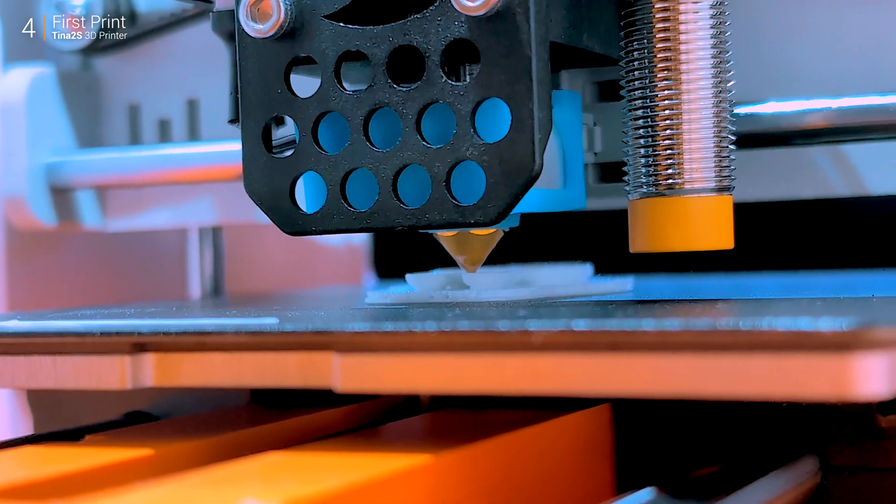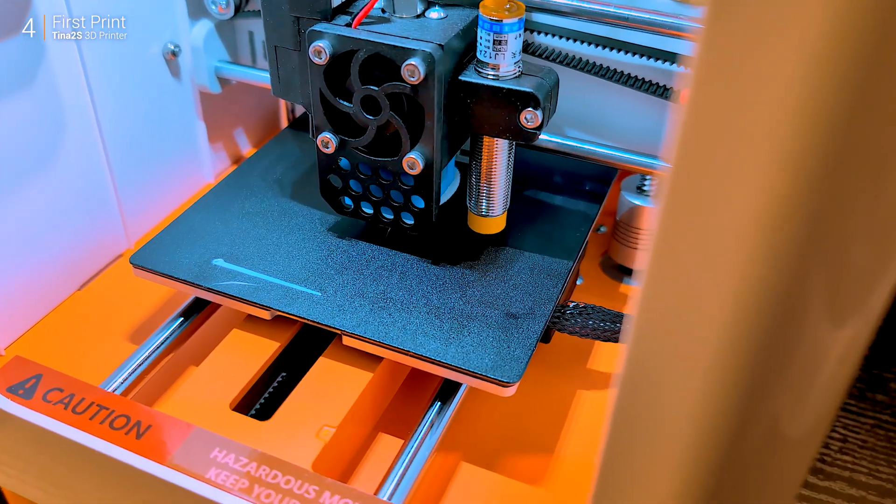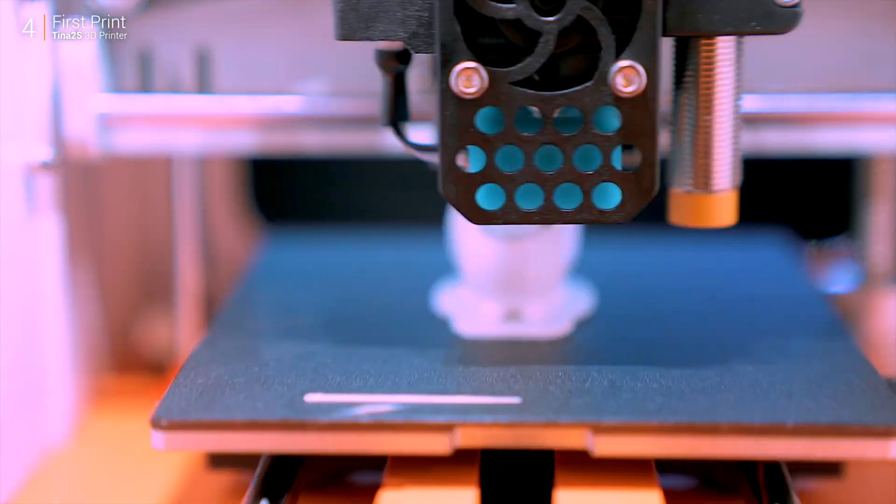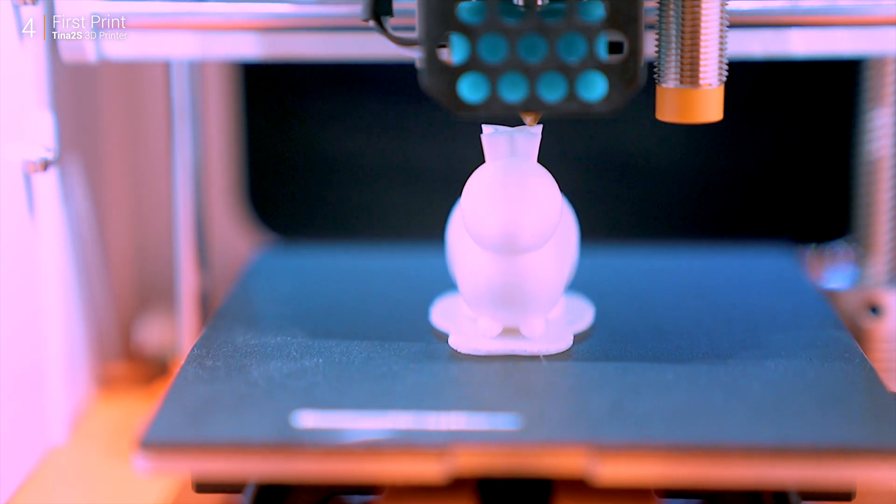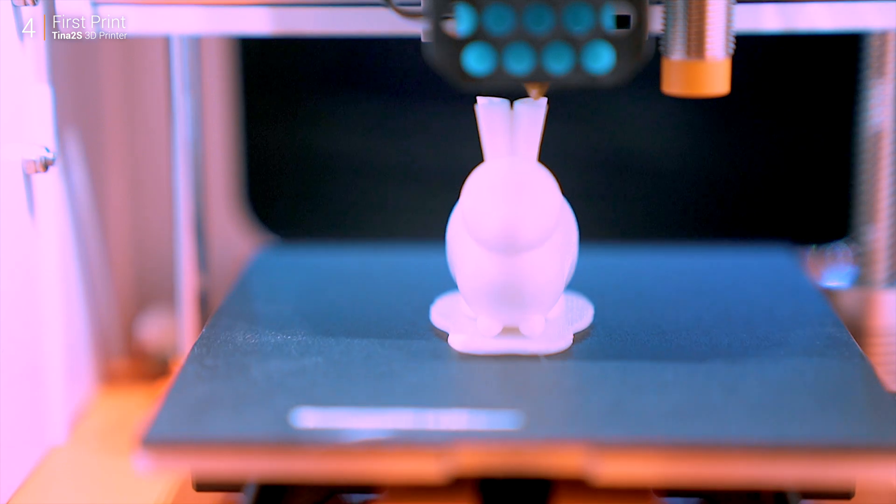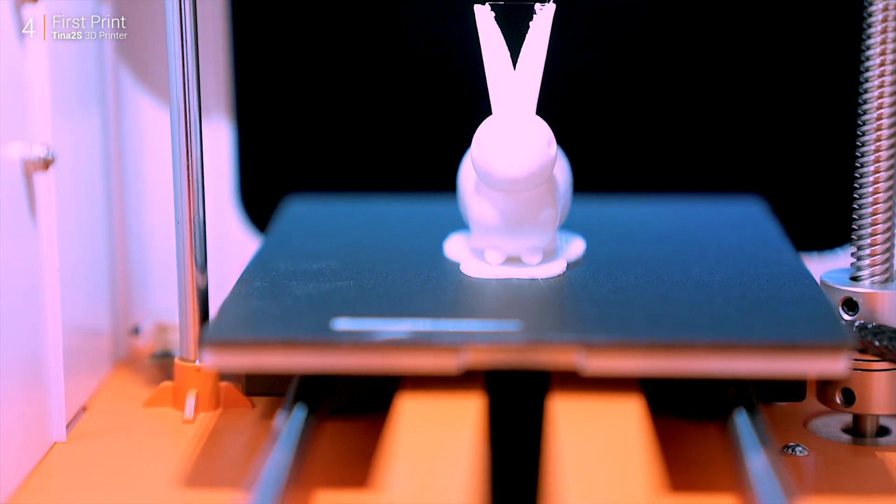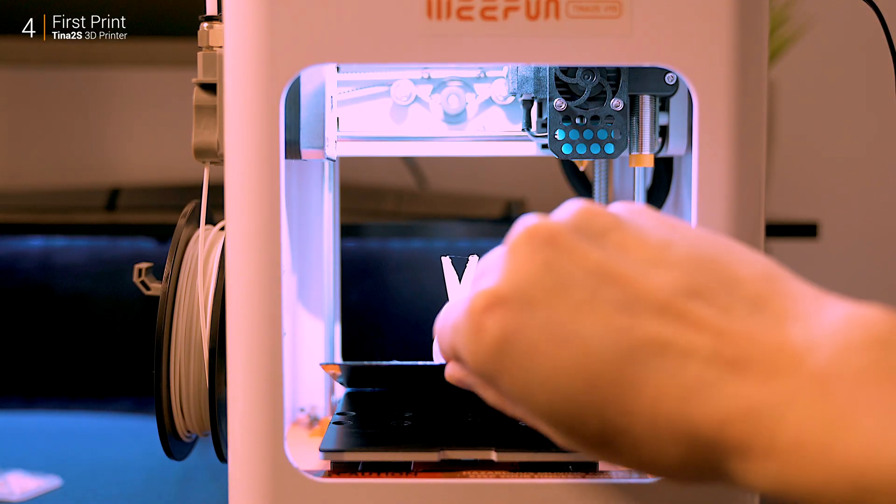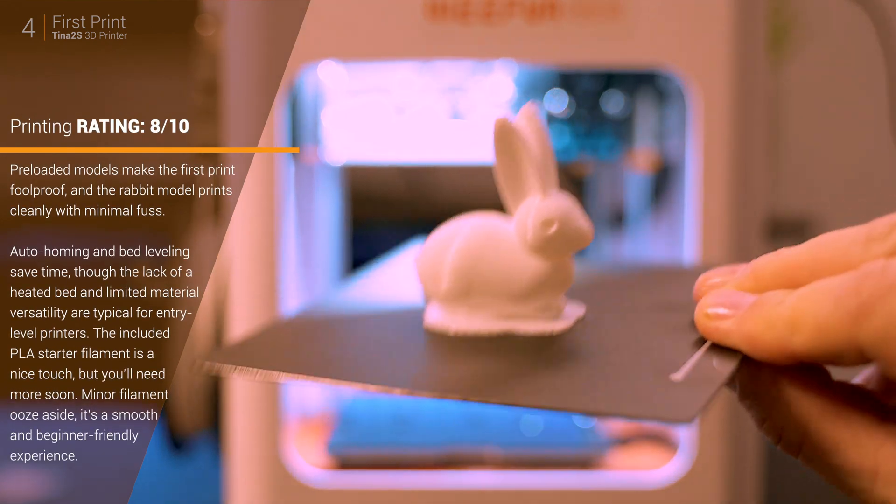One of the best features here is the auto bed leveling. The sensor next to the extruder handles all the adjustments, saving you the headache of manual leveling. For beginners or those who just want a hassle-free setup, this is a huge plus. The magnetic bed is not heated, which limits material options, but for PLA it works perfectly. The bed slides forward easily, making model removal simple. The prints are clean, detailed, and surprisingly accurate for such a compact printer.